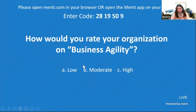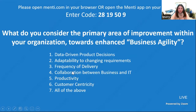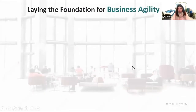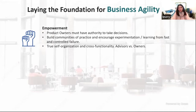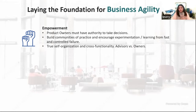So how do we fix this situation and enhance business agility? We have to start with the foundations. Starting with empowerment: product owners need the authority to make decisions without going back to a large set of functions in an approval cycle to take decisions about a product they technically own. Then build communities of practice, encourage experimentation, learn from fast controlled failure, and build a culture — especially within product owners — that encourages experimentation and data-driven decisions.